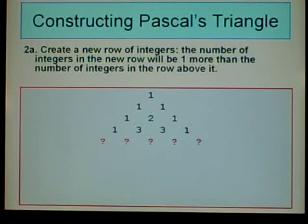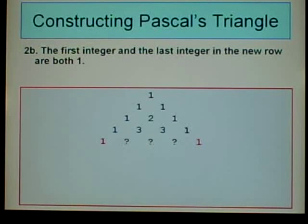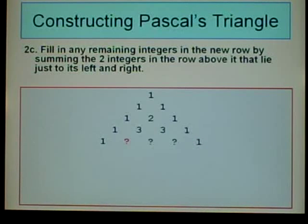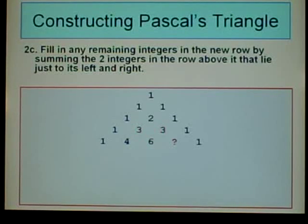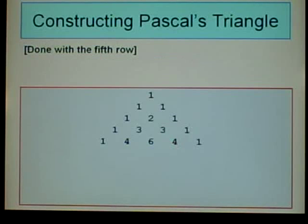We're going to add a fifth row. We had four integers in the row above, so we have five integers in this row. The first and last are both 1. For the remaining unknowns: 1 plus 3 equals 4. Next unknown: 3 plus 3 equals 6. Next unknown: 3 plus 1 equals 4. Now we're done with the fifth row.